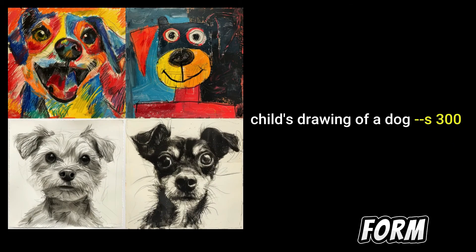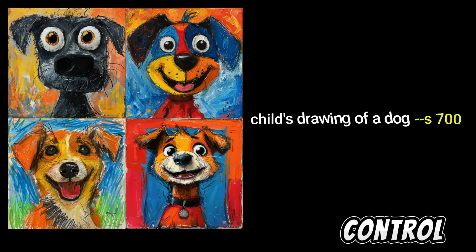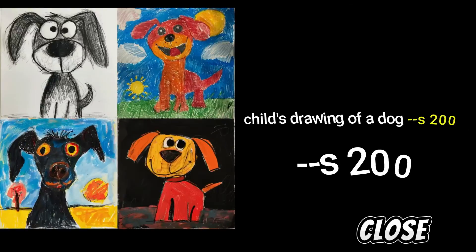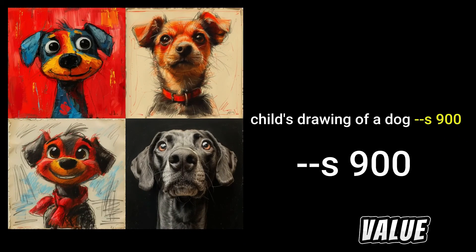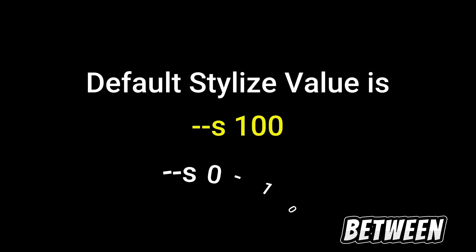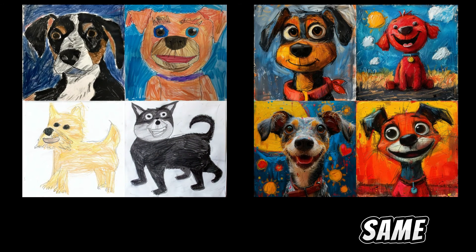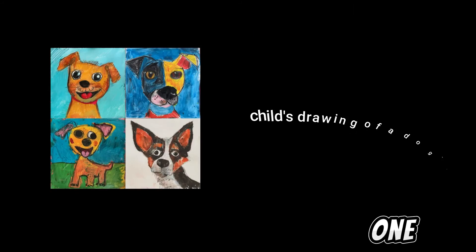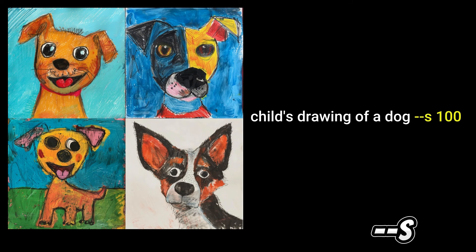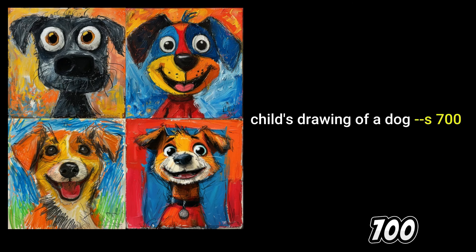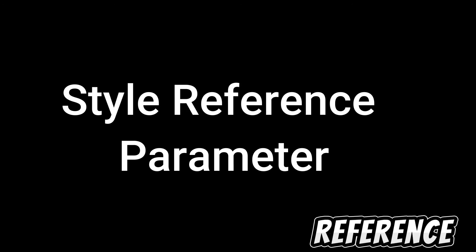The stylized parameter controls the degree to which Midjourney's artistic training is applied. A lower stylization value produces images that closely match the prompt but are less artistic, while a higher value produces very artistic images that are less connected to the prompt. The default is 100, ranging from 0 to 1000. For example, using the prompt: child's drawing of a dog — at stylization 0 the result is literal, while at 1000 it becomes highly artistic, with 100, 200, 300, through 900 showing progressive artistic variation.